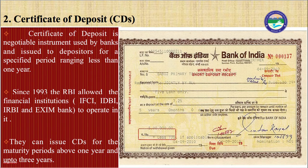Certificate of deposit is a negotiable instrument issued by banks to depositors for a specified period of less than one year. Negotiable instruments are written contracts whose benefits can be passed from the original holder to a new holder. Since 1993, the RBI allowed financial institutions — such as IFCI, IDBI, and EXIM Bank — to issue certificates of deposit for maturity periods above one year and up to three years. Regional rural banks and local area banks cannot issue certificates of deposit.